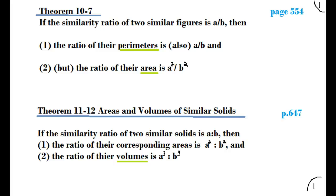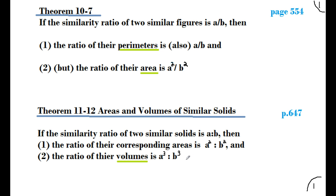This video covers similarity ratios, area ratios, perimeter ratios, and volume ratios. Take a look at pages 554 and 647 for these theorems. If the similarity ratio of two similar figures is a to b, then the perimeter ratio is also a to b, the area ratio is a² to b², and the volume ratio is a³ to b³.